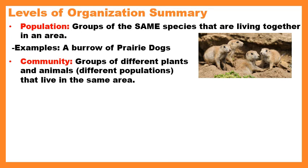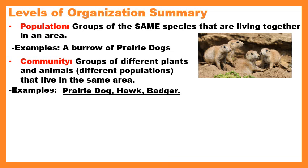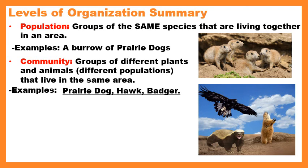A community is different groups of populations — different species of plants and animals living in the same area. Using the classroom example: if it were just us humans, we'd be a population, but if I moved in some plants and an aquarium full of fish, now we have a community — a population of humans, a population of plants, and a population of fish. With prairie dogs: a population of prairie dogs, a population of hawks, and a population of badgers together form a community because they're different species existing in the same place.